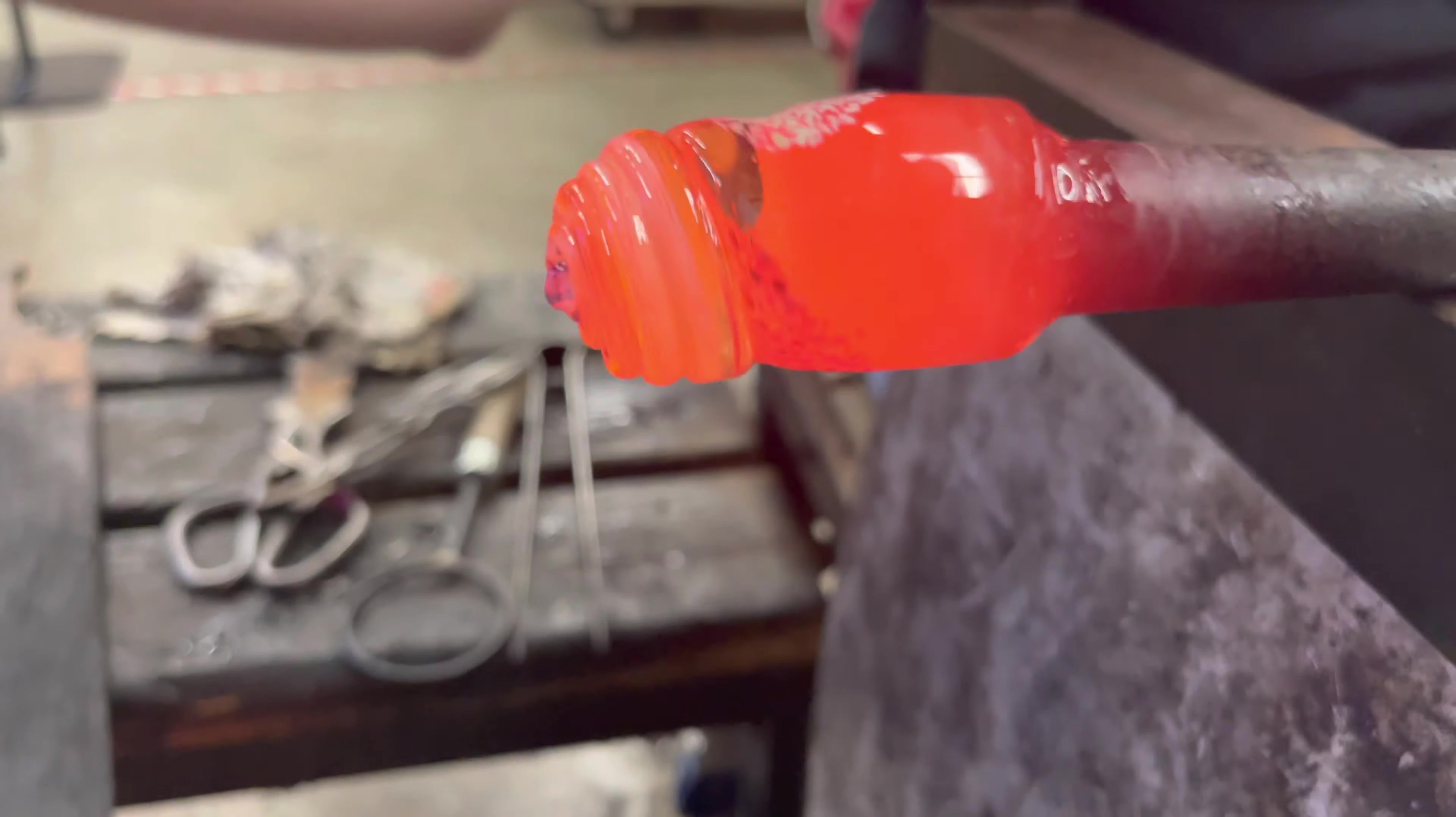Placing it in some vermiculite will ensure that the float will retain its heat as we add the decorative stamp. And this is how we turn a sphere into a float.